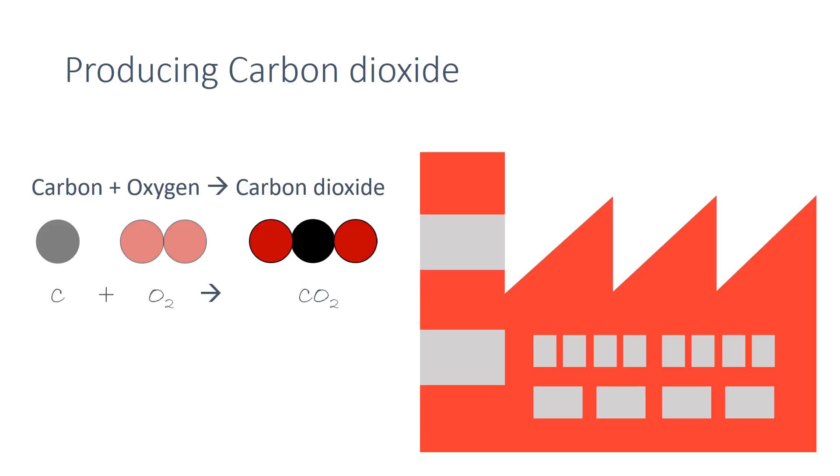If combustion occurs when there's not enough oxygen, then instead of all the carbon turning into carbon dioxide, carbon monoxide gas is formed. You may also form unburnt tiny solid particles of carbon which are more commonly known as soot.